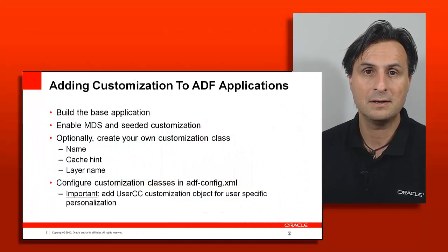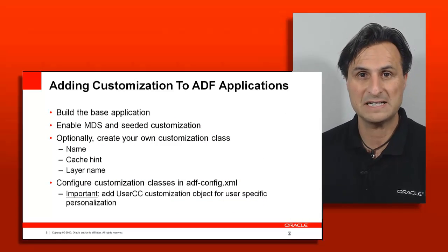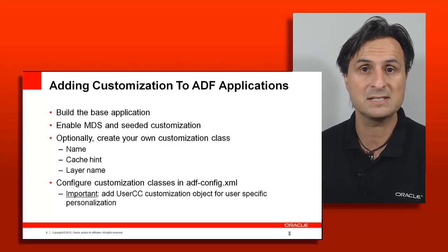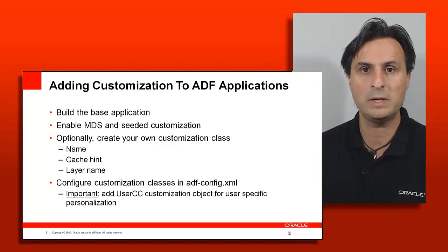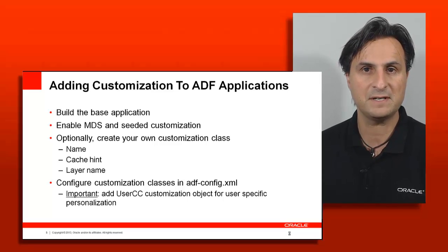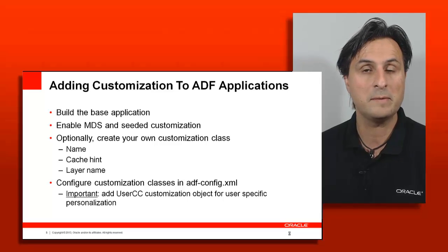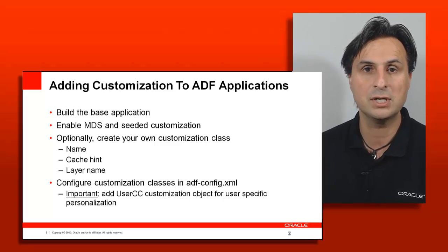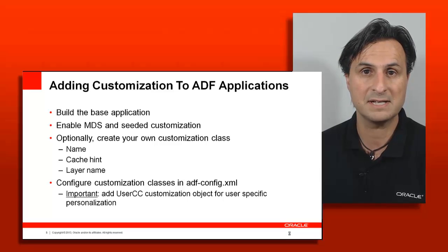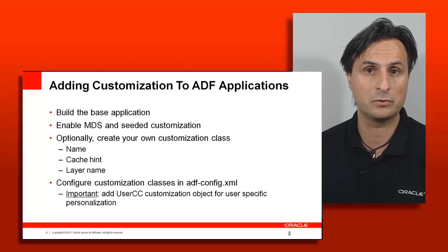When creating a customizable ADF application, it all starts with the base application. Layers are Java objects — you build a Java object extending a documented class and configure it to be read at runtime. This object tells whether a specific string representing the layer name will be applied to a running application. It's re-evaluated per page request, giving you flexibility to even disable customization at runtime for QA or support purposes.